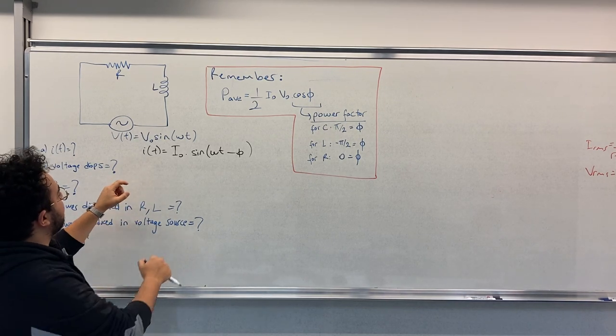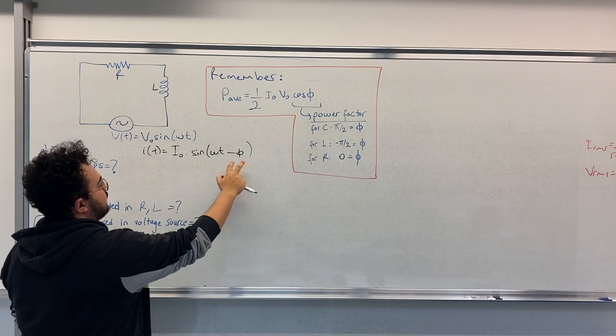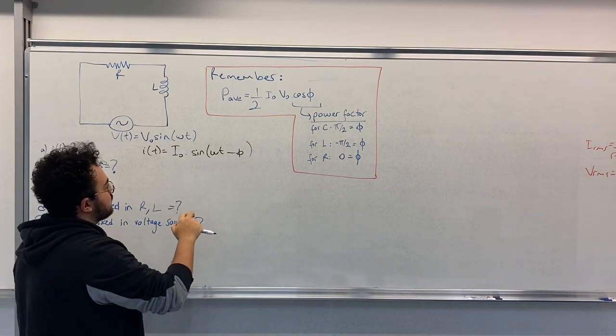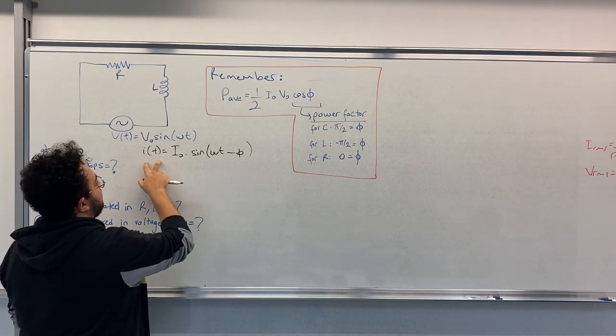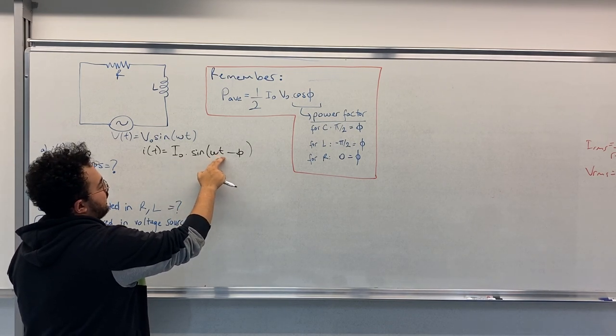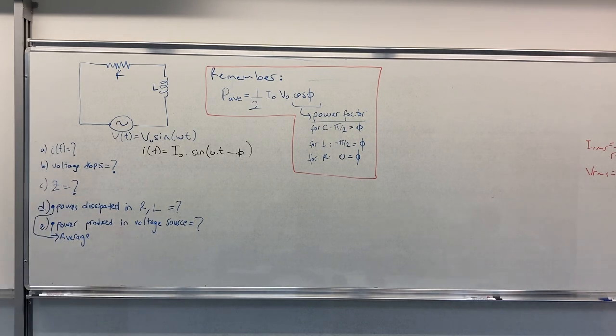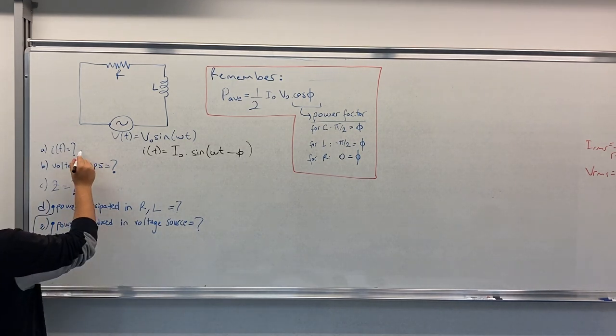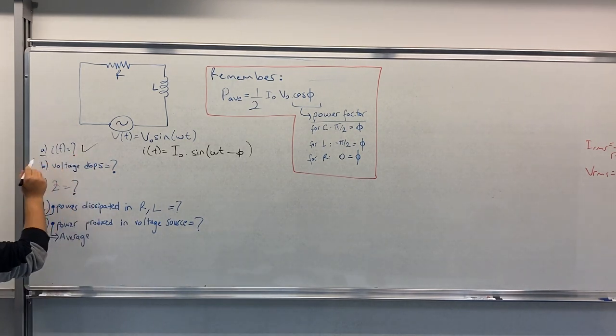So let's say that we calculated I0 and the phase just like in the other question, and we know that IT is I0 times sin(ωt - phase). So we solved part A.